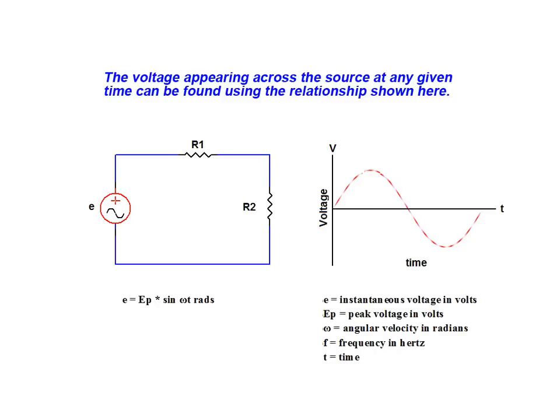In this relationship, E represents the instantaneous voltage in volts, EP represents the peak voltage in volts, Omega represents the angular velocity and is measured in radians, F represents the frequency of the source in Hertz, and T represents the desired time in seconds.